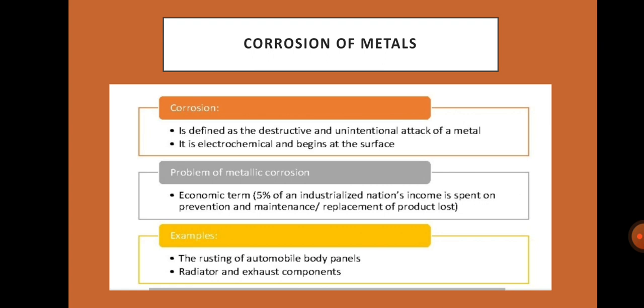The problem of metallic corrosion in economic terms: 5% of unindustrialized nations' income is spent on prevention, maintenance, or replacement of product loss. Examples include the rusting of automobile body panels, radiators, and exhaust components.